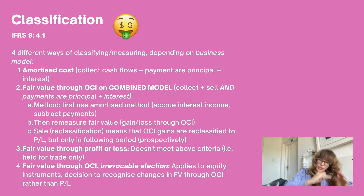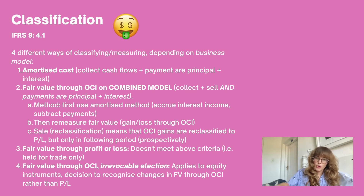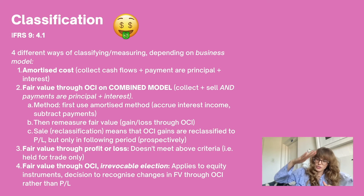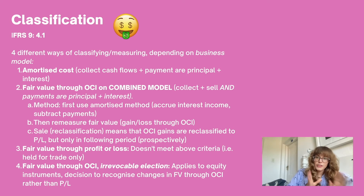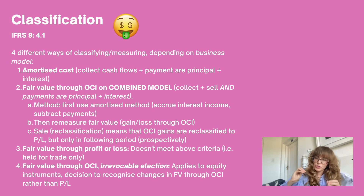The third method is fair value through profit and loss. This is where the financial asset doesn't fit into the criteria of either amortized cost or the combined model — for example, if your intention was only to trade this financial asset. There you just recognize changes in fair value through profit or loss. The exception is that you may have an irrevocable election to measure at fair value through OCI — this is number four — where an entity holds another equity instrument and has made the decision to recognize changes through OCI rather than profit or loss.